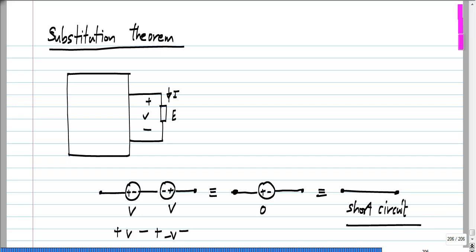I can place this fancy short circuit in any wire I choose in the circuit without altering it, because I have not really changed anything at all. It is only that instead of thinking of it as a wire or short circuit, I am thinking of it as a series combination of two voltages of equal and opposite values. So this will be exactly equivalent — let me replace this wire with my fancy short circuit.